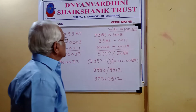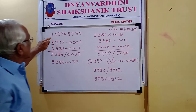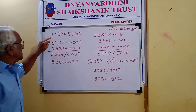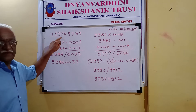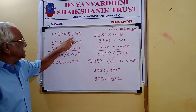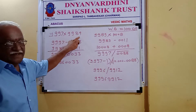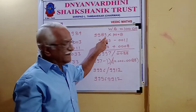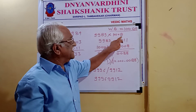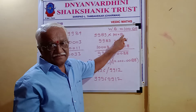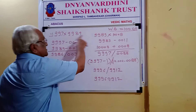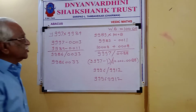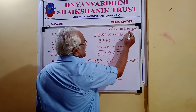Now here, we are going to see these two examples: 9,997 into 9,989, and in the same way, 9,989 into 10,008. At least 4 figures are nearer to 10,000.